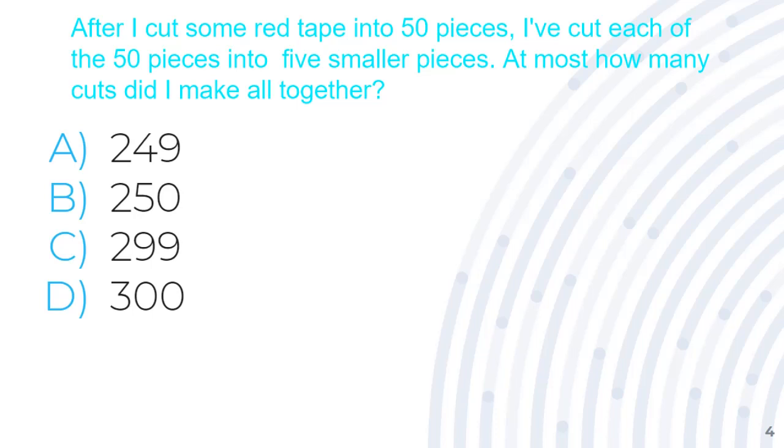So if we cut through 1 piece, we get 2 pieces. If we cut through 2, we get 3 pieces. If we cut through 3, we get 4 pieces. 4 cuts, we get 5 pieces. And 49 cuts would get you 50 pieces.